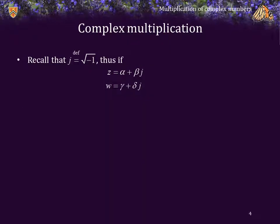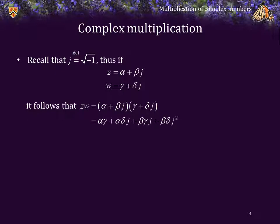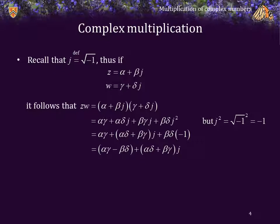Recall that by definition, j is just the square root of negative 1. Thus, if z is equal to alpha plus beta j, and w is equal to gamma plus delta j, then it follows that z times w is equal to the product of these two. Expanding it out just the same way we did before with FOIL, we get this result. The only difference now is that we replace j squared with negative 1. That gives us the following result, combining the real components and the imaginary components to get the product of these two complex numbers.